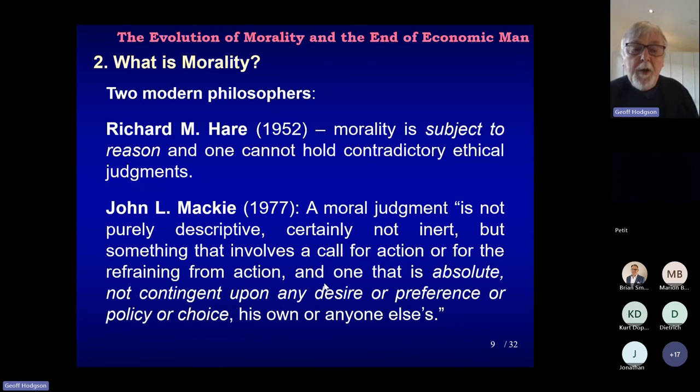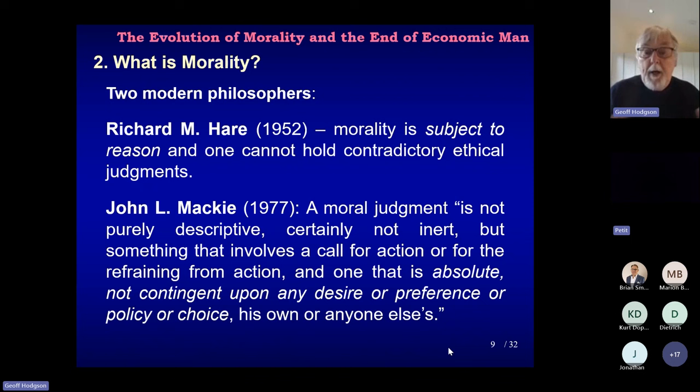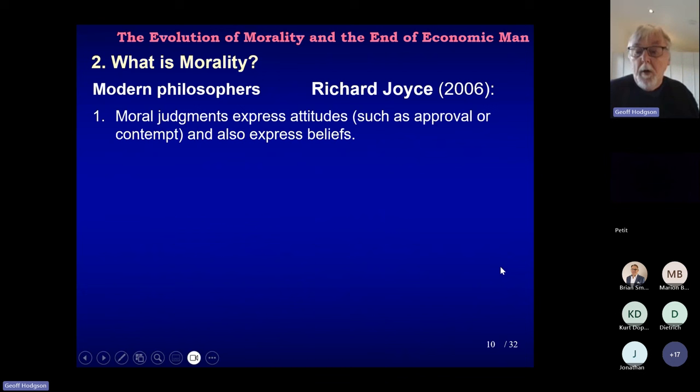Turning to Mackie's point in more detail: this idea that morality is not descriptive and has an absolute character — in such circumstances you should always do this or always do that — and it's also separable from desire, preference, or choice. It's not simply because I say it's a good idea; I believe in a moral framework, and therefore one should act in this way or refrain from acting in that way. This uncontingent feature of morality tends to undermine a standard utilitarian approach to morality as we find in economics.